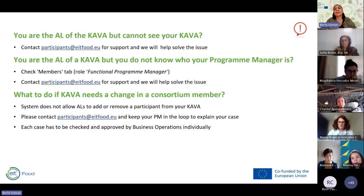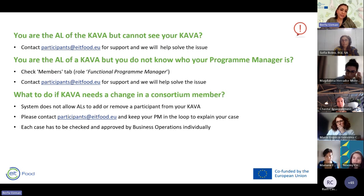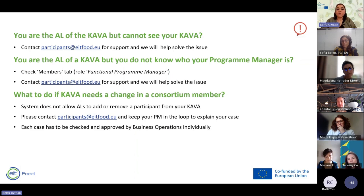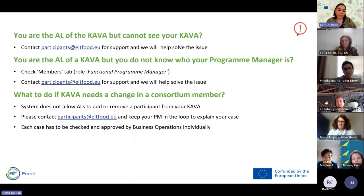Participant amendments are not among the list of things that can be amended. The system will not allow Activity Leaders to add or remove a participant, as new participants may need to complete validation and be discussed within the team. If you have requirements about adding a new participant, please contact us and keep your program manager in the loop. Each case has to be checked and approved by Business Operations individually, as each case is different.